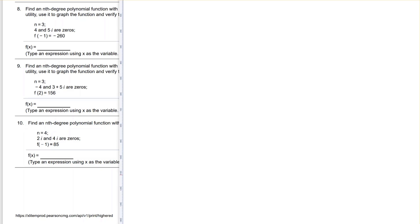So in number 8, they tell us that the degree of our polynomial is 3. That means our highest exponent will be x to the third. They tell us that 4 is a zero, 5i is a zero.